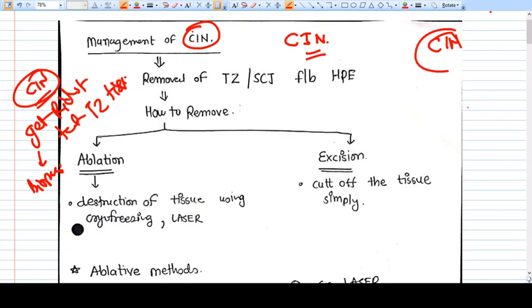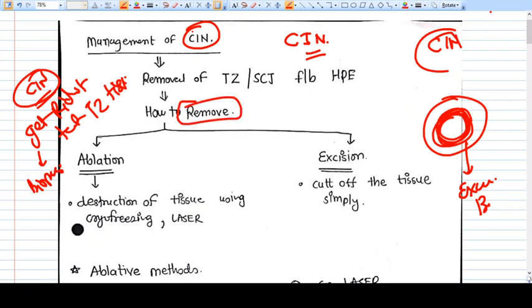What we need here is to remove the tissue around the squamous columnar junction and then examine them under HP examination. There are two different methods to remove the CIN tissue, that is SCJ or TZ transition zone.